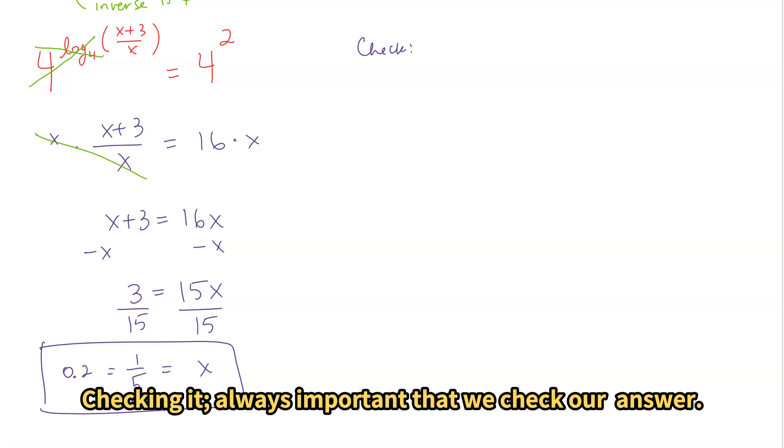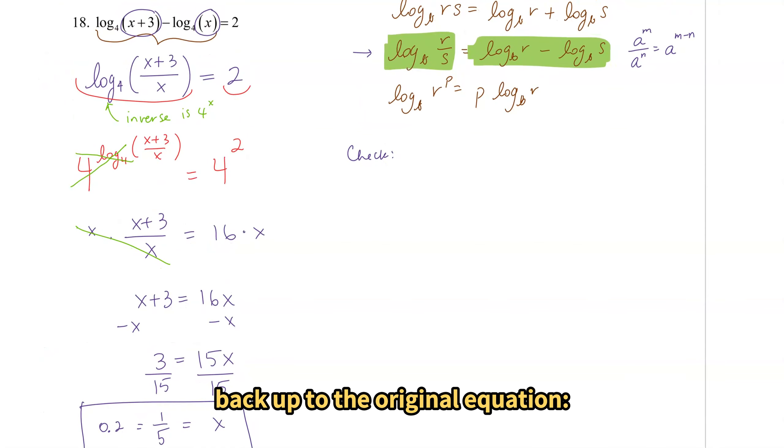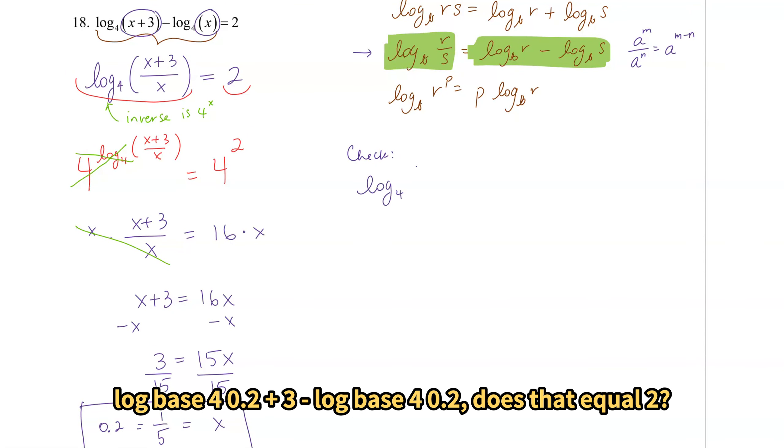Checking it. Always important that we check our answer. We're going to go all the way back up to the original equation. Log base 4, 0.2 plus 3 minus log base 4, 0.2, does that equal 2.